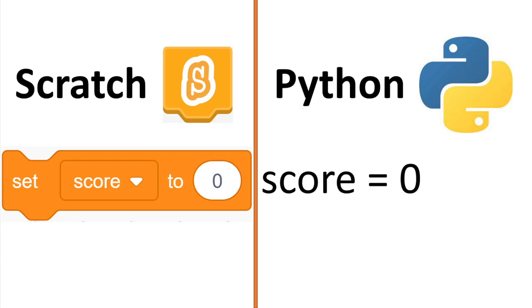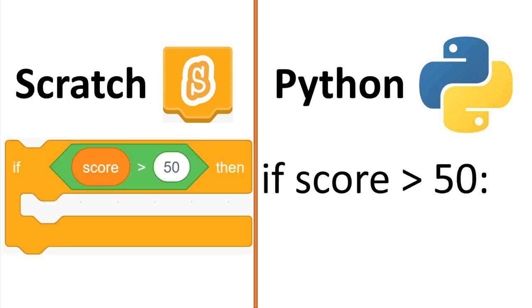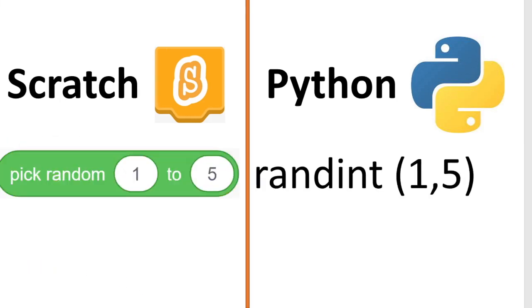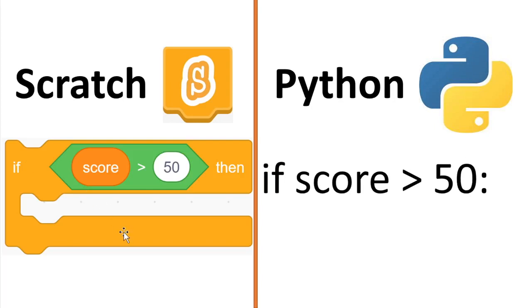Another example is with the if condition. In Scratch we have 'if score is greater than 50 then', and in Python all we do is 'if score greater than 50' then a colon.